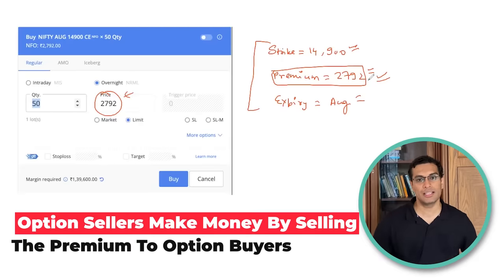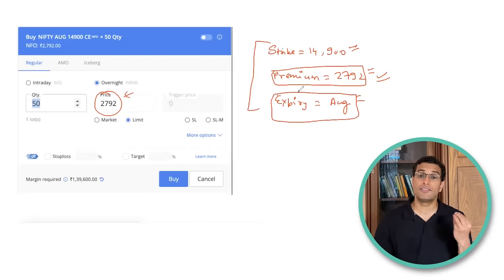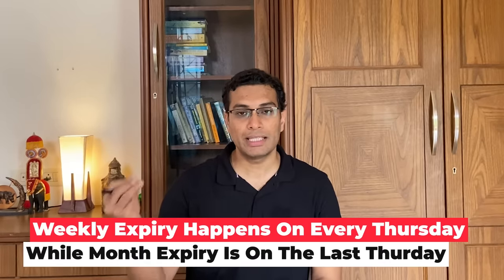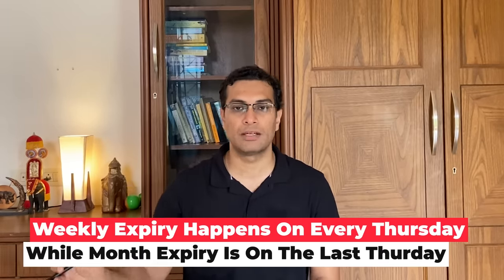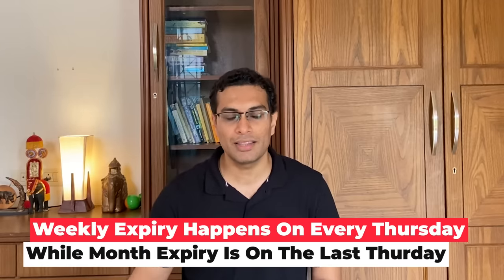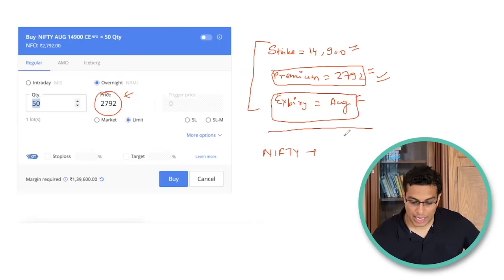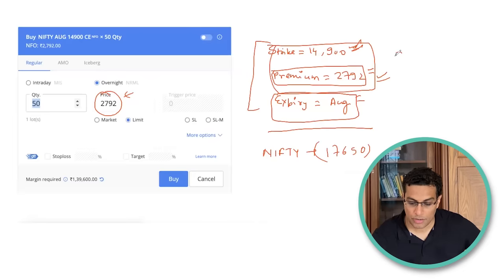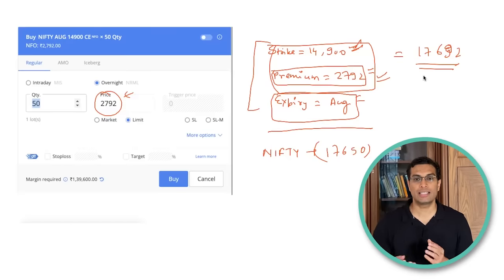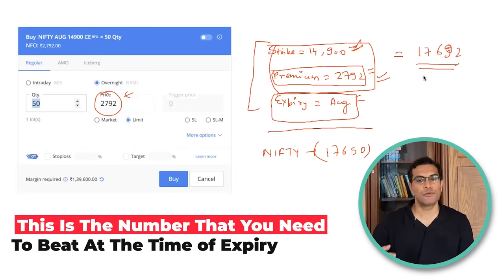Option sellers make money by collecting the premium — the insurance — while option buyers pay the premium. The third term is expiry. There is weekly expiry and monthly expiry. Weekly expiry happens on Thursdays, and monthly expiry happens on the last Thursday of the month. If it's a holiday, it happens on Wednesday.